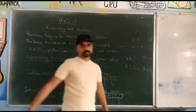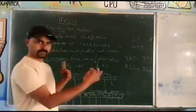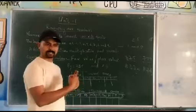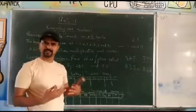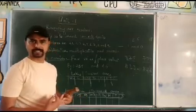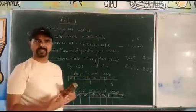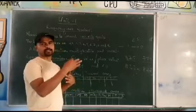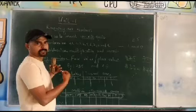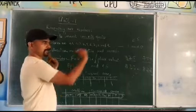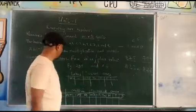So to compare numbers: first of all, count how many digits are on each side. If one side has 5 digits and the other has 3 digits, the 5-digit number is greater. If both sides have an equal number of digits, then you compare each digit starting from the left side — the leftmost digit first, then the next, and so on.